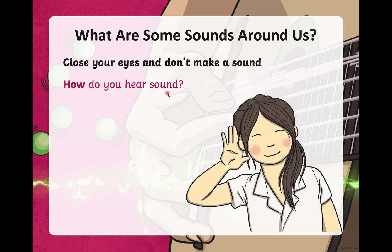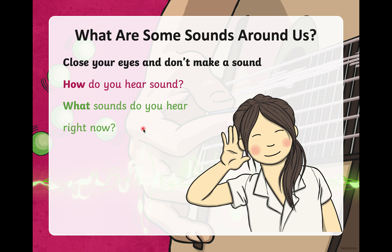You hear sounds with your ears. Keep your eyes closed — no cheating now! What sounds do you hear right now? You can hear your teacher talking. Can you hear some other sounds right now? Think about those sounds but keep your eyes closed. Remember, you're going to only use your sense of hearing.